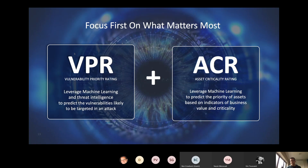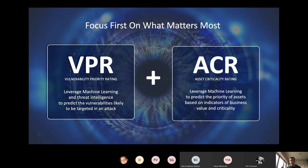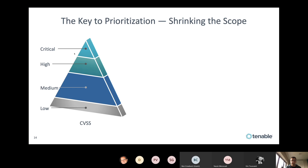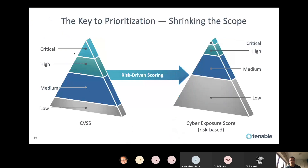So we talked about VPR as a CVSS alternative. We also have asset criticality rating (ACR) — how critical is an asset: is it a firewall, is it internet-facing, does it have a web server, is it a SQL server, does it have containers actively running? All these things are really important. Together, ACR and VPR give you a cyber exposure score for an asset and for the total company. Based on CVSS you have a lot of criticals and highs, but with cyber exposure scoring, you only have a tip of the iceberg that is truly critical in your environment, and the rest can go on a normal patching cycle.